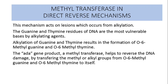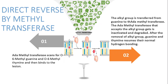This methyltransferase reversal process involves two steps. First, the ADA methyltransferase scans for methylguanine or methylthymine residues and binds tightly with the lesion where a methyl or alkyl group is attached to the bases — this trapping of the methyl group is the second step. The alkyl group is then transferred from guanine to the methyltransferase enzyme, after which the methyltransferase, having accepted the alkyl group, gets inactivated or degraded. Following removal of the alkyl group, guanine and thymine resume their normal hydrogen bonding and the damage is thus reversed.